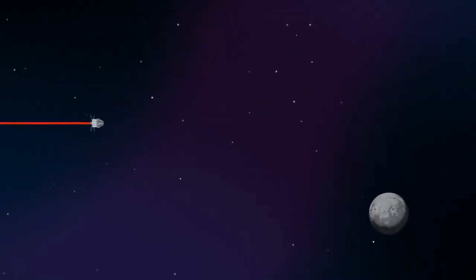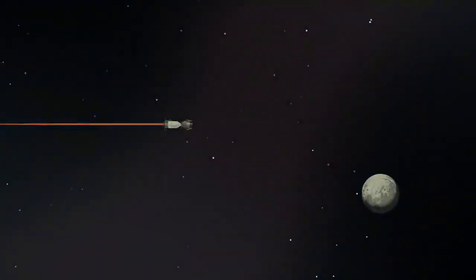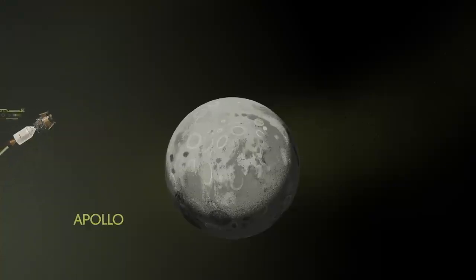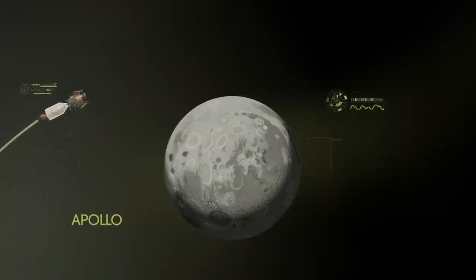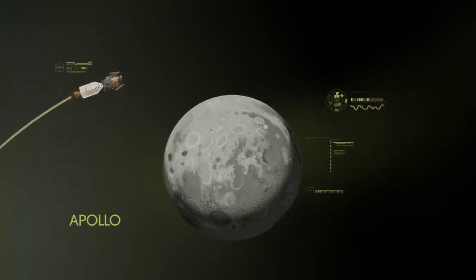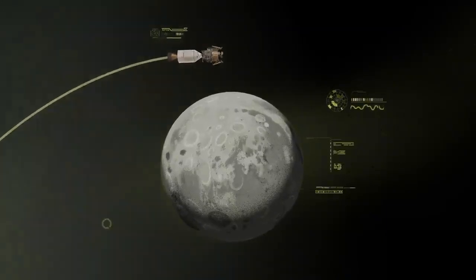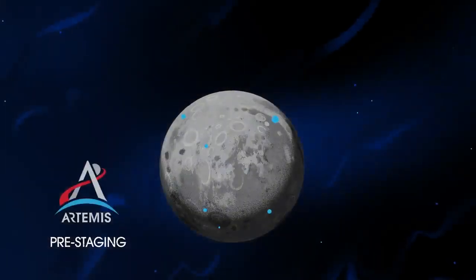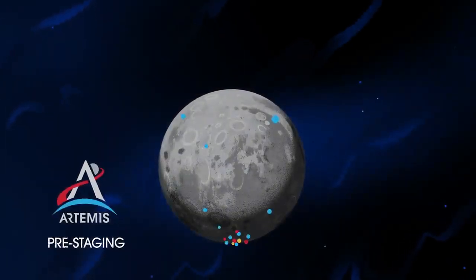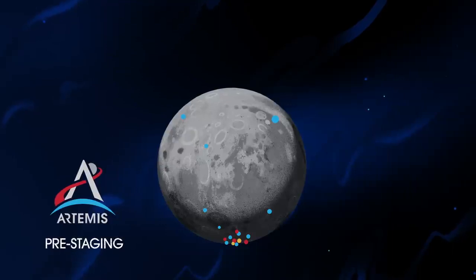Approaching the Moon, we see the fundamental differences between Artemis and Apollo. Instead of requiring Orion to serve as an expendable lunar command module or to carry a constrained lunar lander, the Artemis missions will take advantage of a different approach, pre-staging.